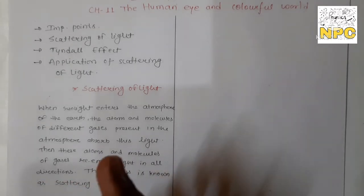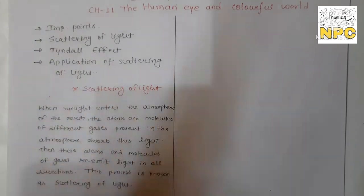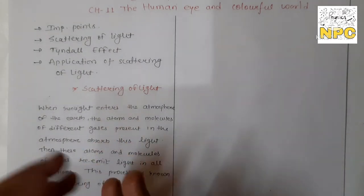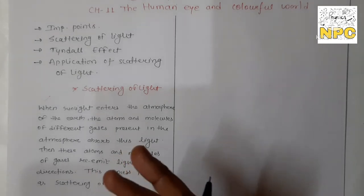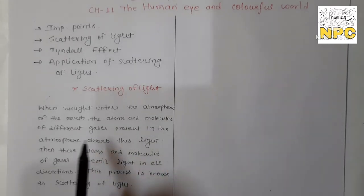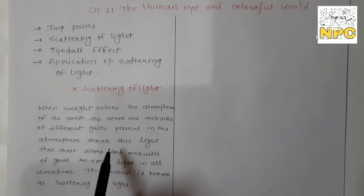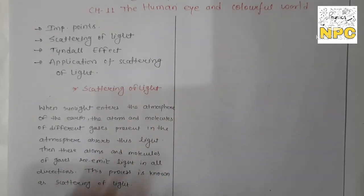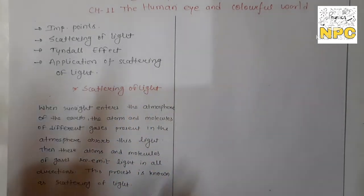Scattering of light — the simple meaning is that light rays incident on a particular particle go off in a different direction after that incident. Talking about the definition: when sunlight enters the atmosphere of the earth, the atoms and molecules of different gases present in the atmosphere absorb this light, and then these atoms and molecules re-emit light in all directions. This process is known as scattering of light.